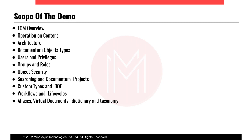Then I will go with the architecture of Documentum, explaining everything layer by layer. Then the Documentum object type — I will explain the hierarchy of objects and how they are integrated with each other. Then users and privileges — how users are added in Documentum, what privileges exist, and how they affect users. Then groups and roles — there is a very thin difference between them, so I will explain everything about this.